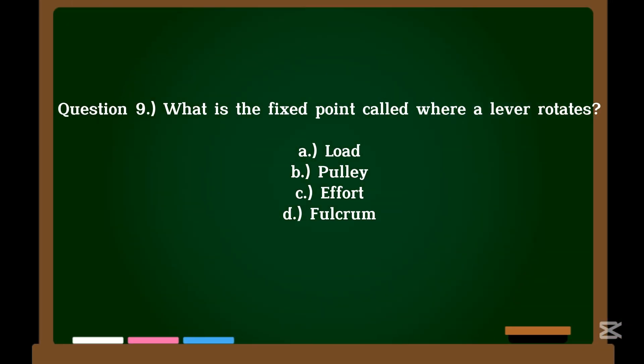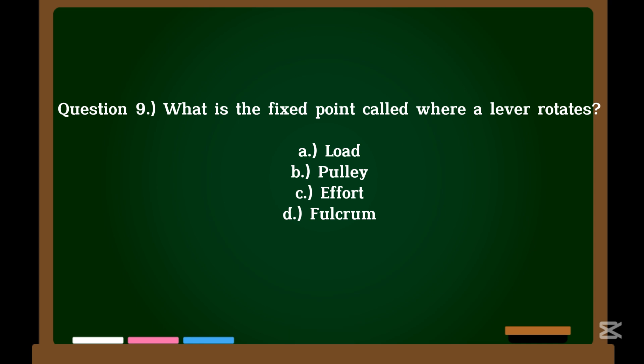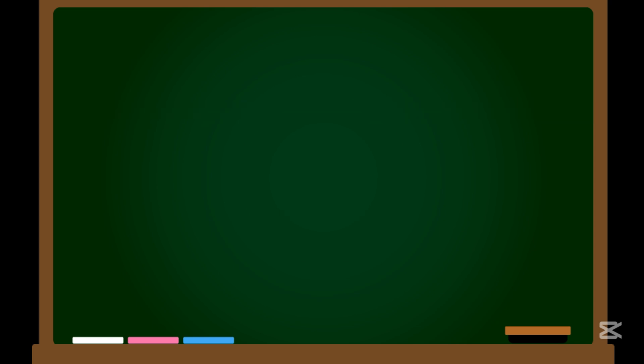Question 9. What is the fixed point called where a lever rotates? A. Load. B. Pulley. C. Effort. D. Fulcrum. Correct answer: D. Fulcrum.